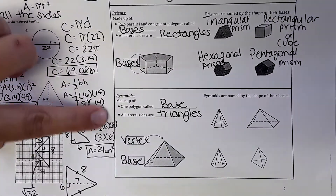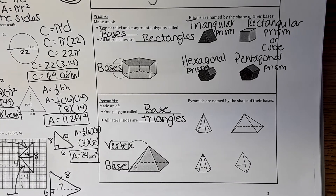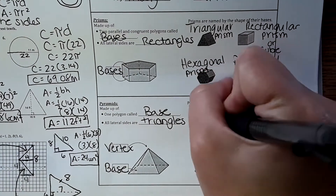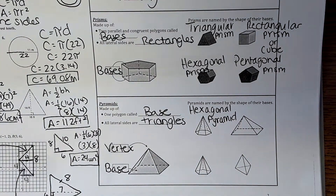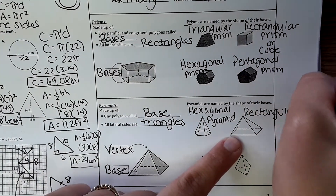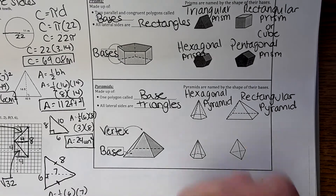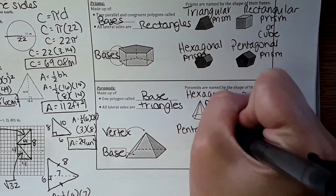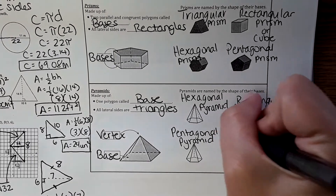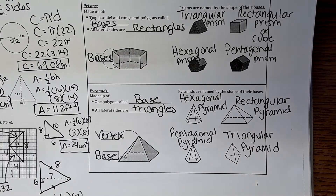Moving on to pyramids, like the Egyptian pyramids: we have a base on the bottom and a vertex at the top point. Pyramids are named by the shape of their base. Here we have a hexagonal pyramid, a rectangular pyramid, a pentagonal pyramid, and a triangular pyramid. Another popular one is a square pyramid, which has a square base.